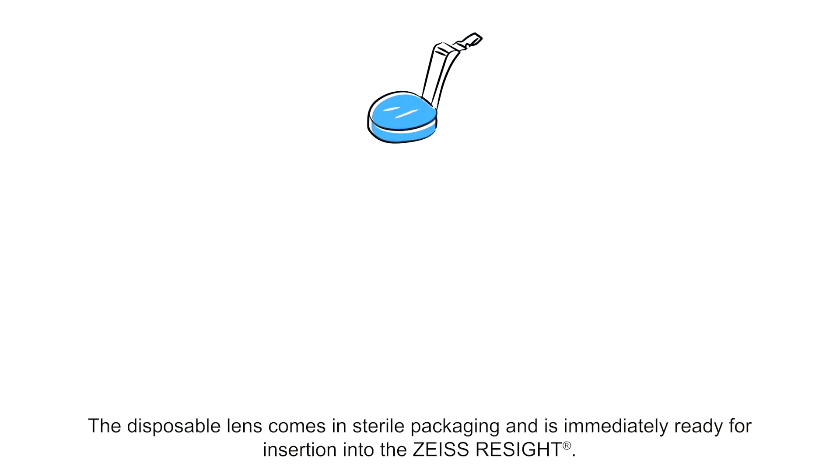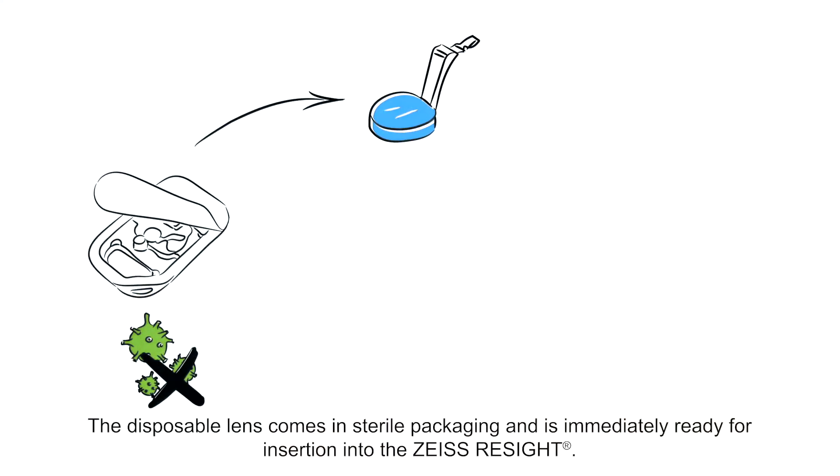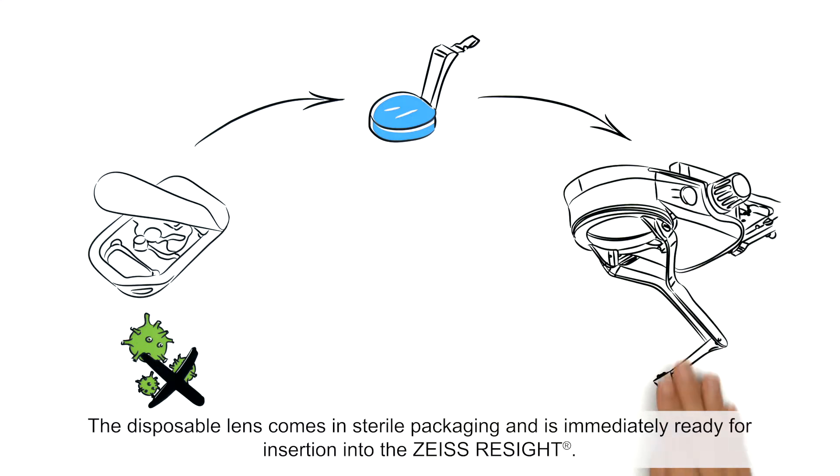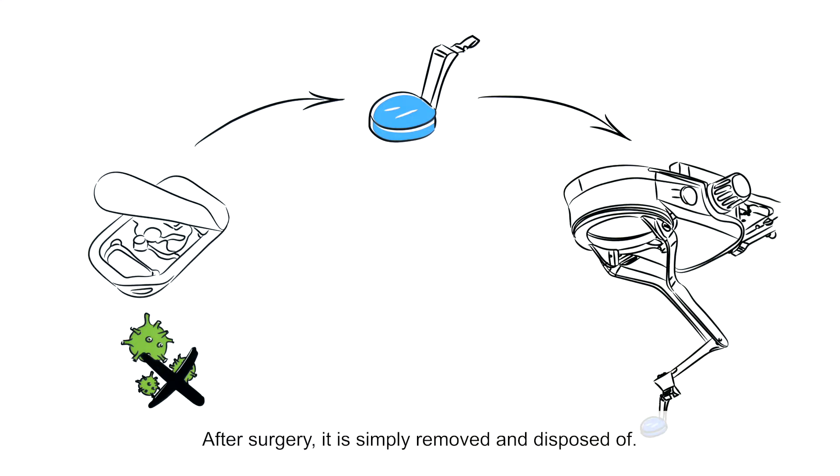The disposable lens comes in sterile packaging and is immediately ready for insertion into the Zeiss Resight. After surgery it is simply removed and disposed of.